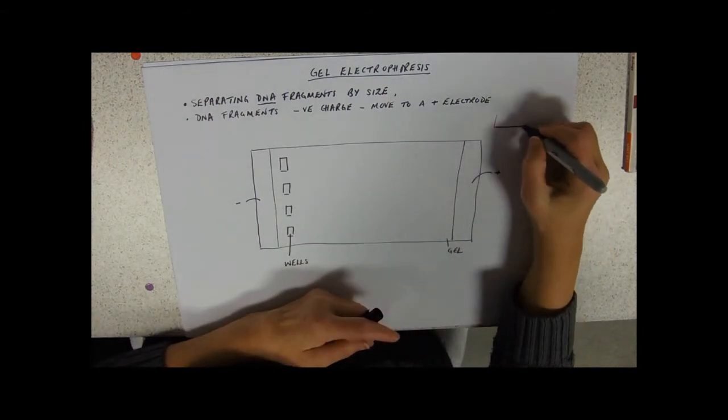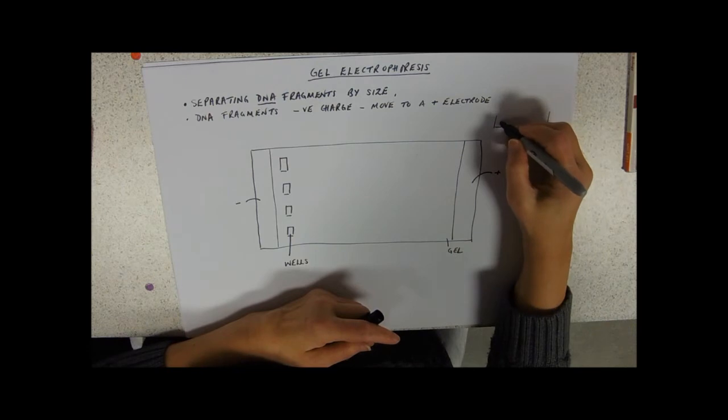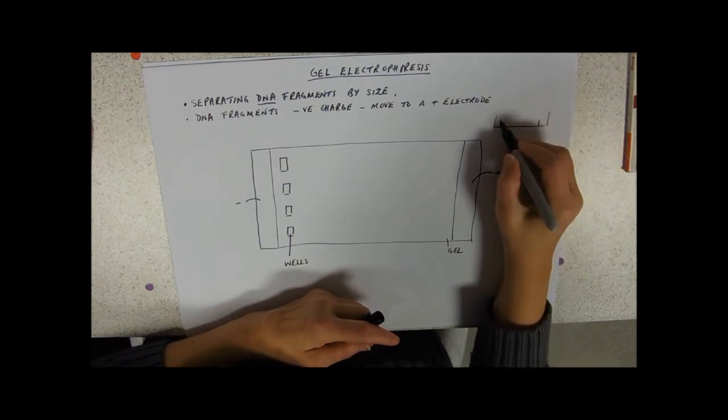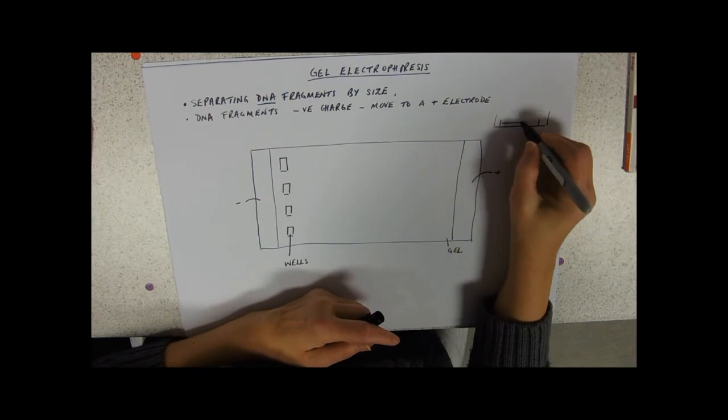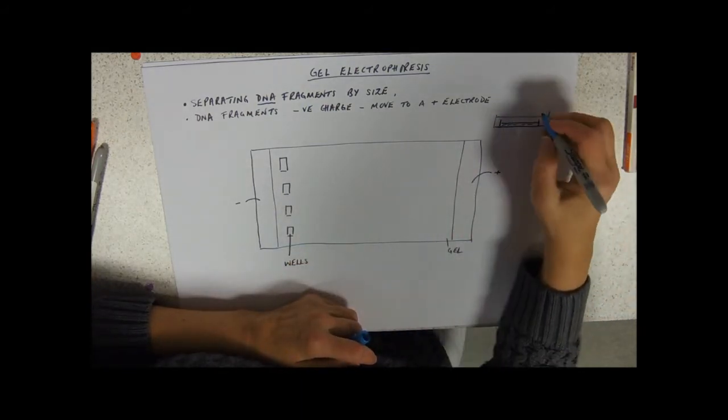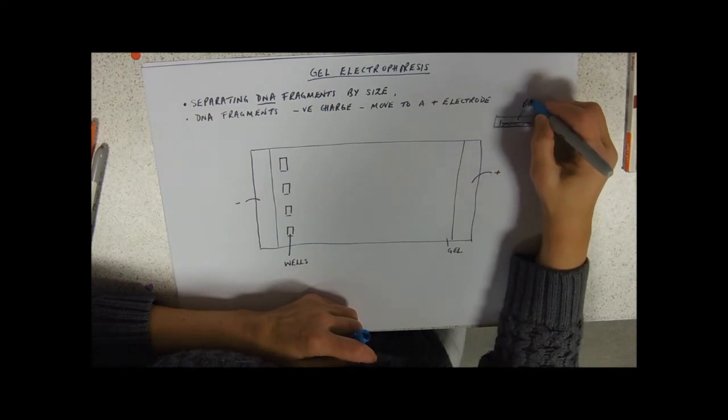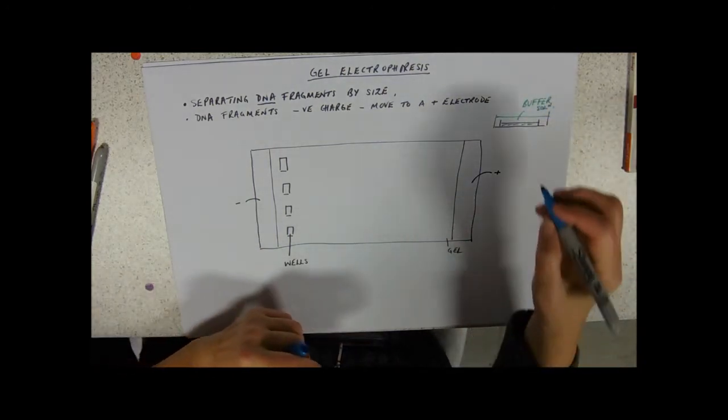To put your DNA sample in. If we looked at it from the side, this bit will be full of the agarose gel. And then into that, so as it fills up the bits at each end and covers the gel, you put a buffer solution. And all that's going to do is conduct the electricity.